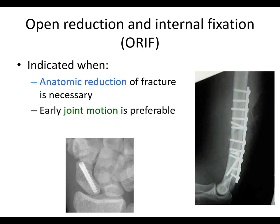ORIF is also indicated when early joint motion is preferable. For example, if you treat a non-displaced scaphoid non-surgically, the patient could be in a cast for potentially three months, whereas with fixation the patient can move their wrist sooner — for somebody who uses their hands a lot, that's really beneficial. Similarly, a surgeon who breaks their humerus may not want to be in a splint for months unable to move the elbow or shoulder, and may prefer to be fixed so they can use their arm and move the joints. Sometimes surgery is indicated for those reasons.